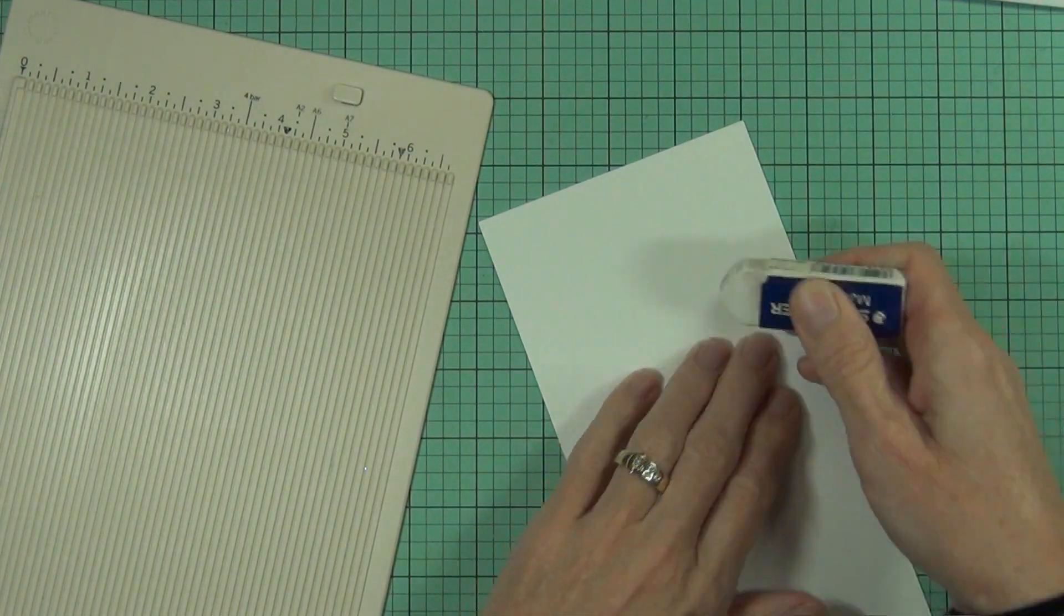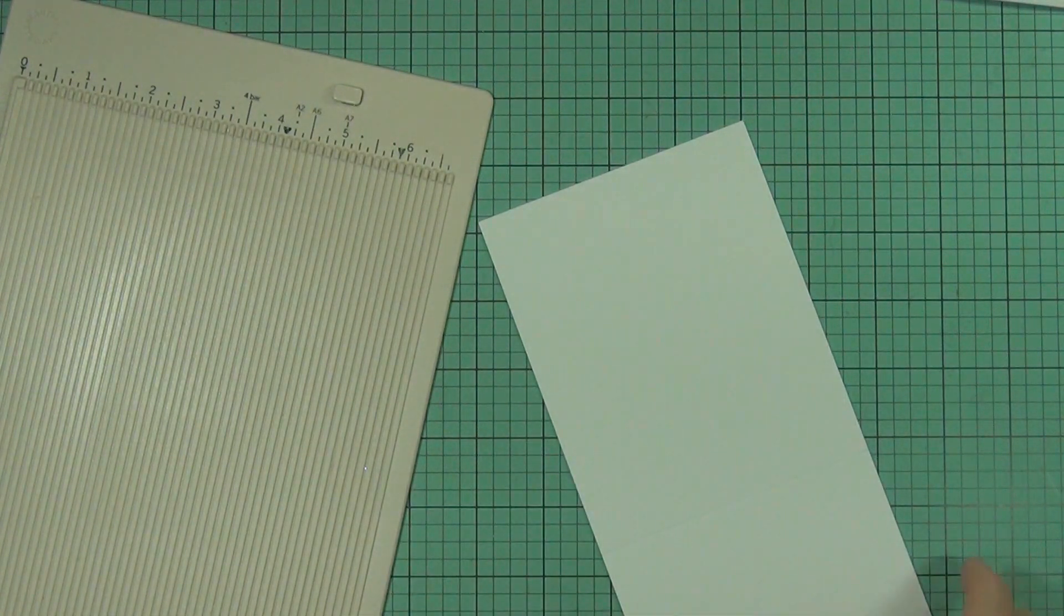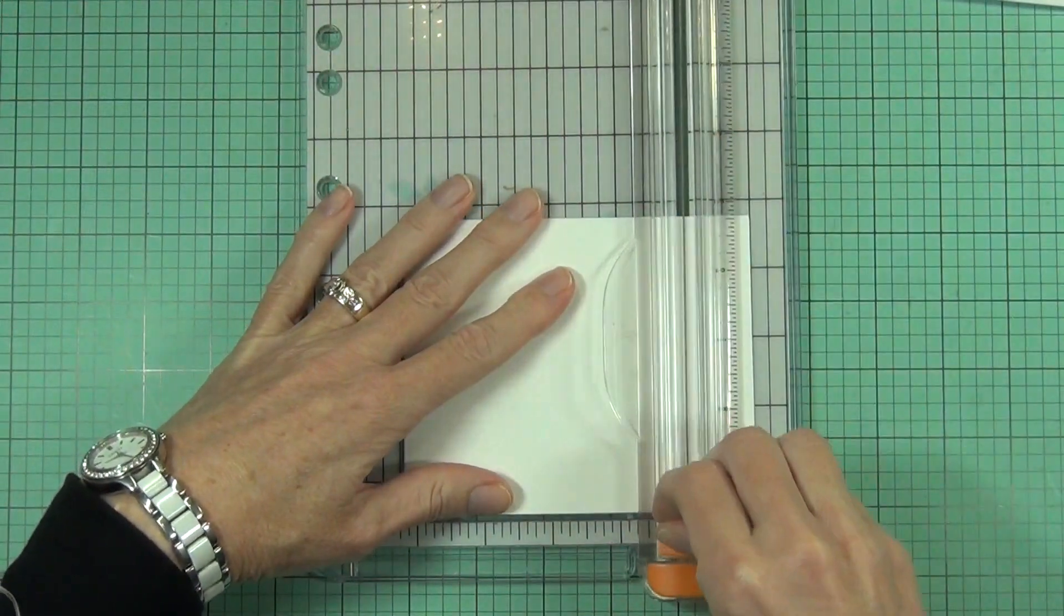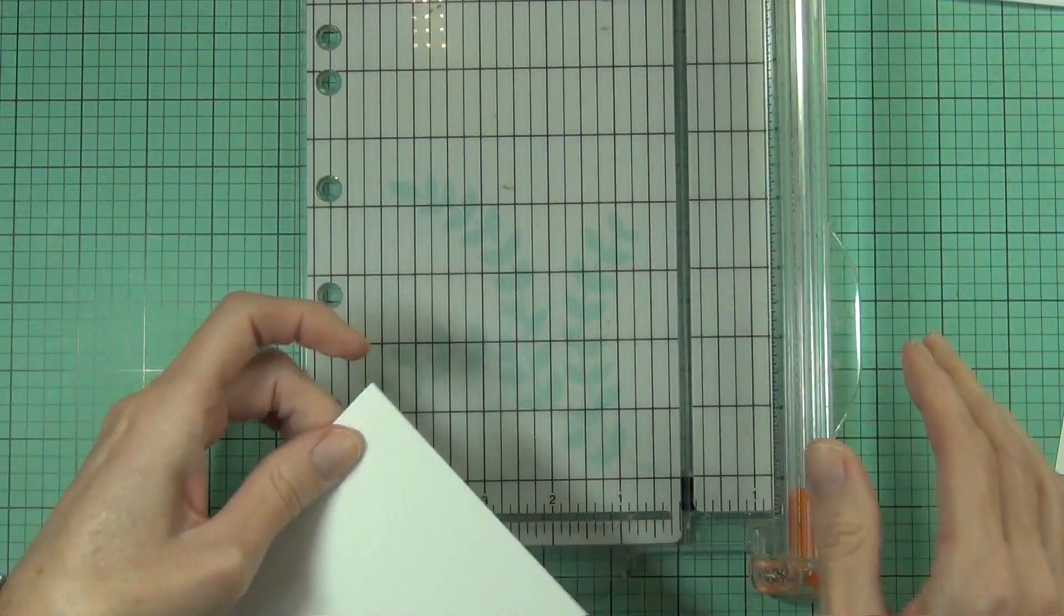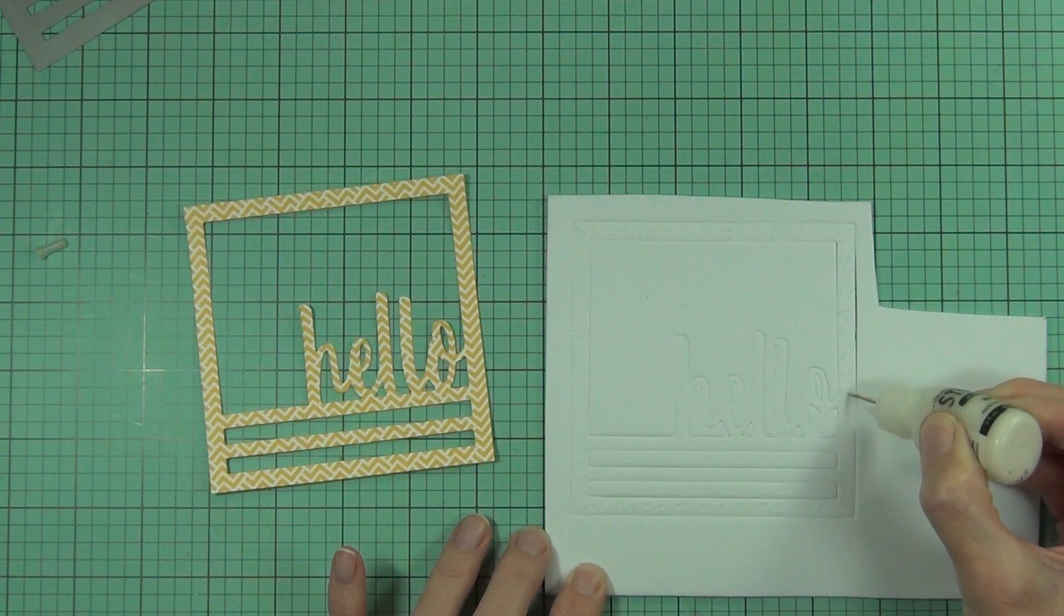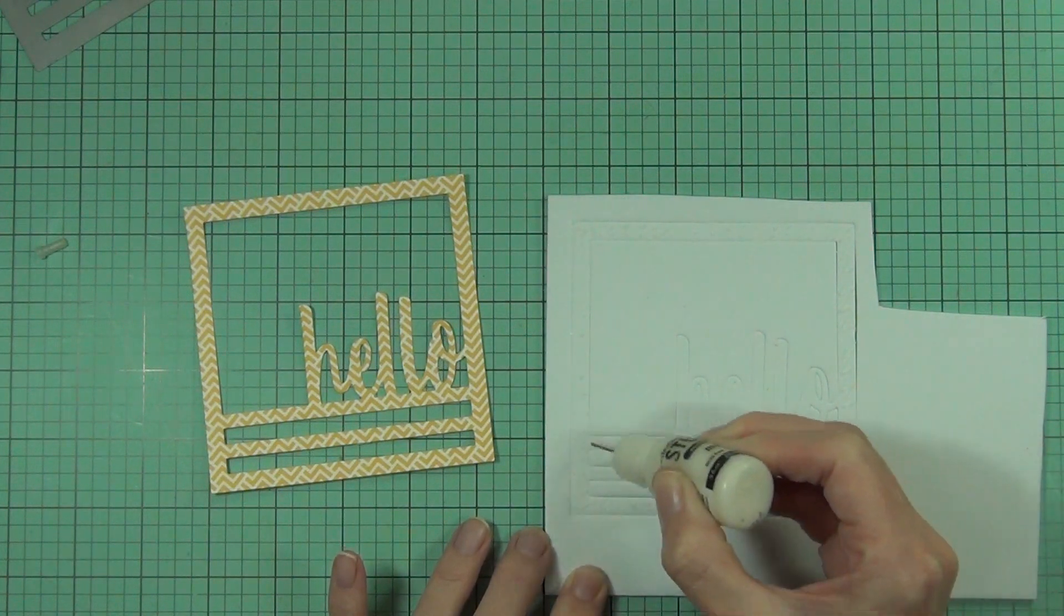I did decide to erase the pencil mark. You're probably not going to see it—it's on the fold of the card—but you know, it's in the details. I'm just going to cut the edge off with my paper trimmer. Basically my card base is made now, exactly the same size as the Hello Square.